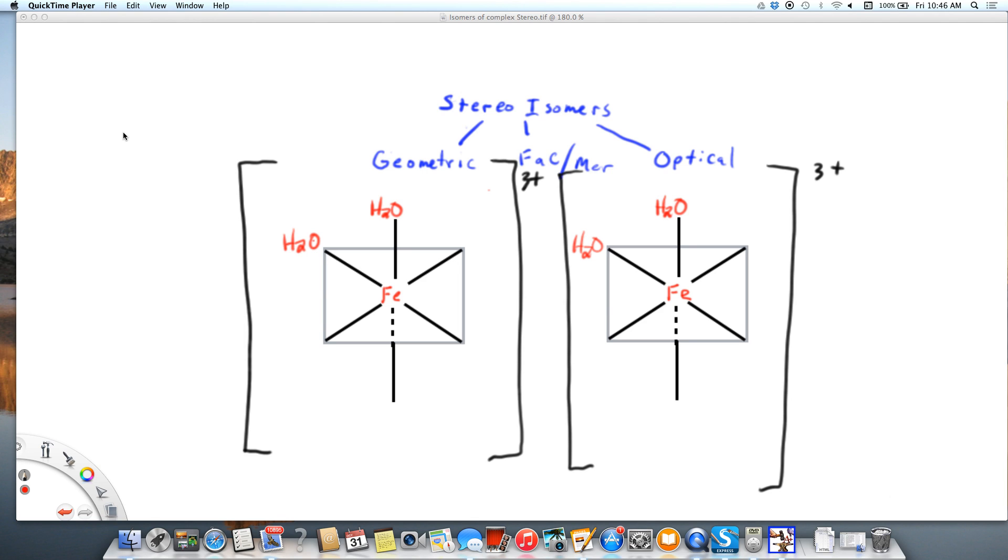I'm going to show you the type of stereoisomer called FAC-mer or better face-meridian. You can see that I've already set up two complex ions with two water molecules as ligands, and they're actually in the same place as we start.